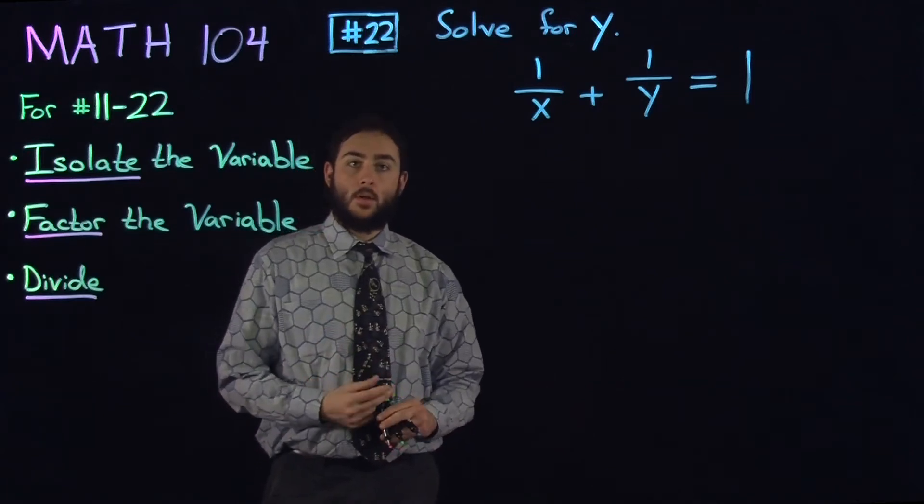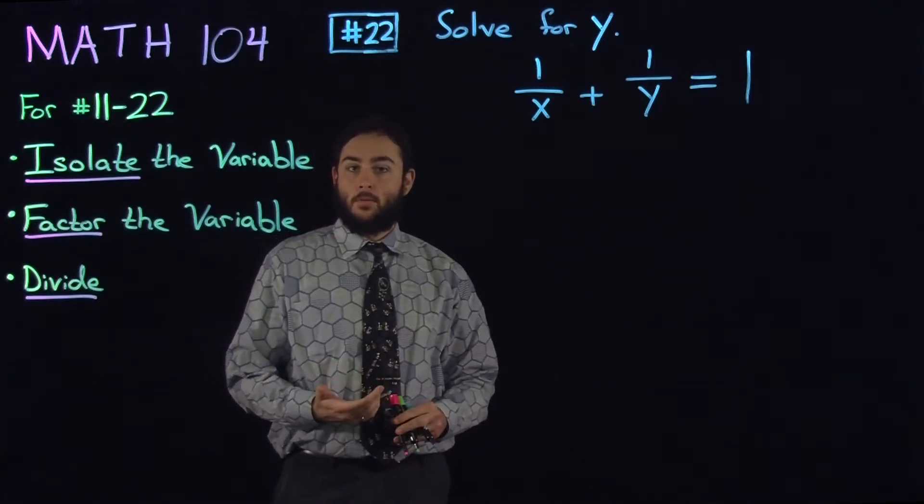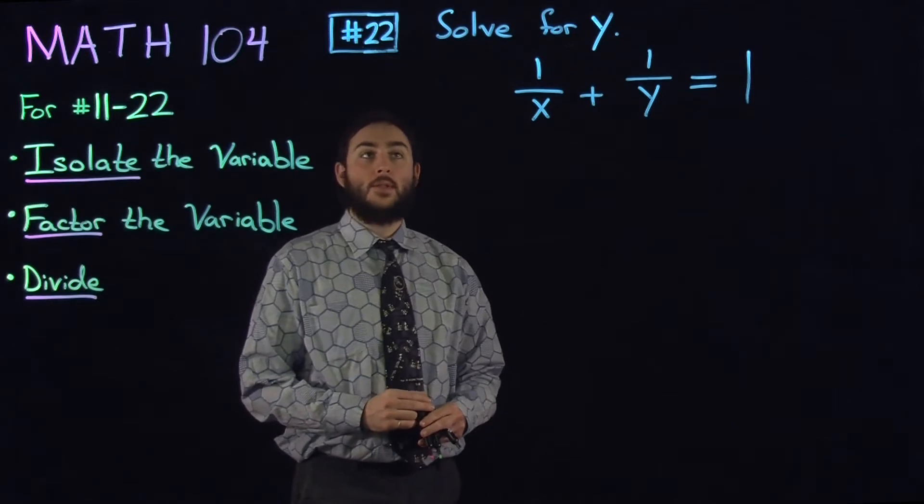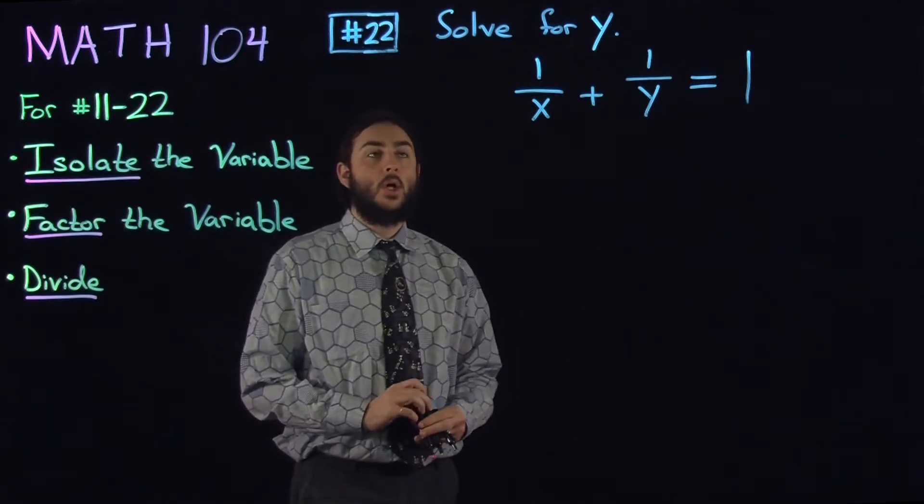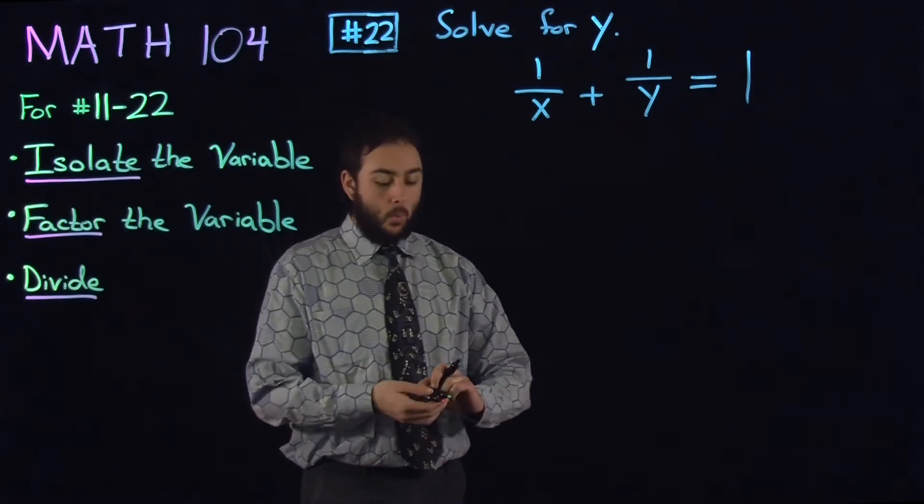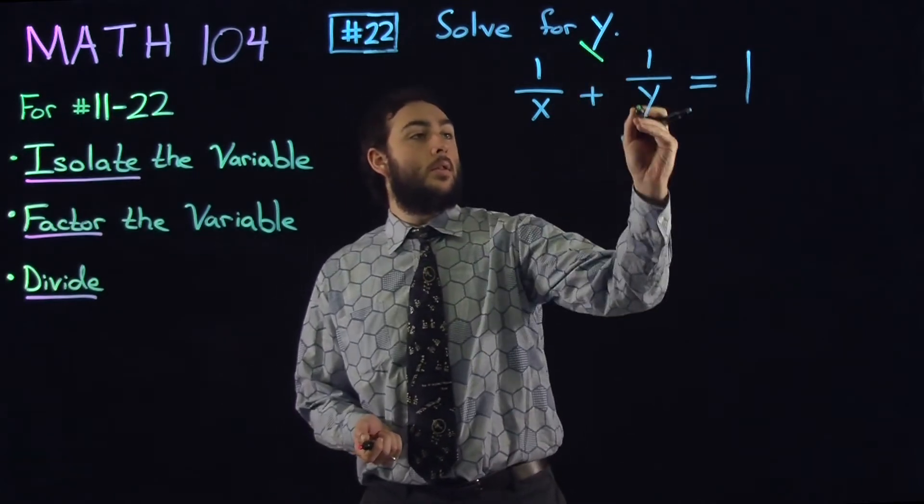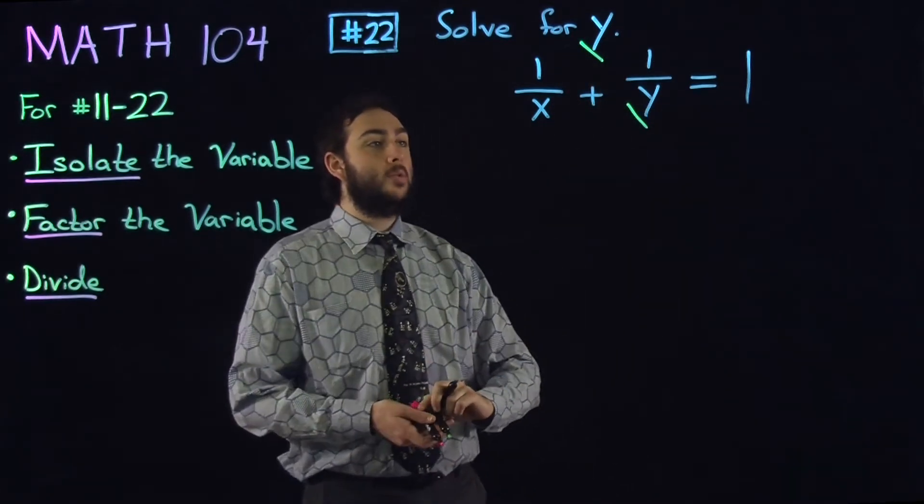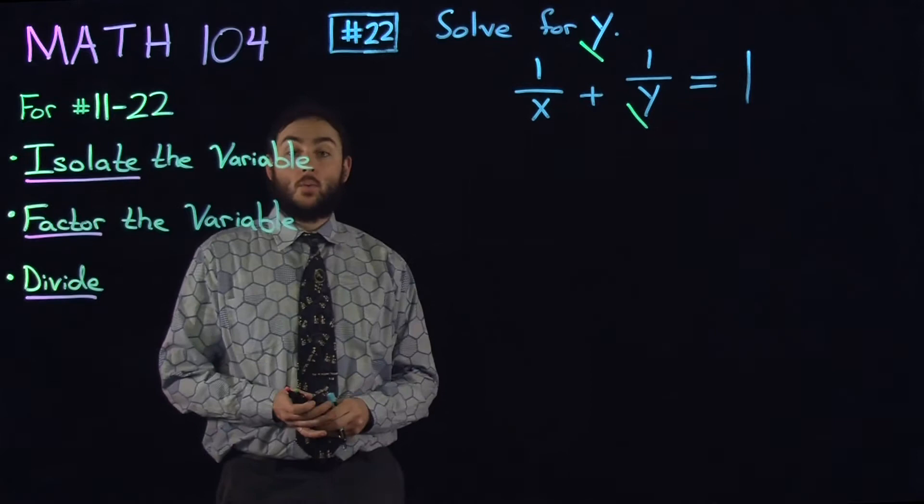Hello, we're continuing solving the gateway questions in the 104 gateway. This is problem number 22. It wants us to solve for y in the following equation: 1 over x plus 1 over y equals 1.